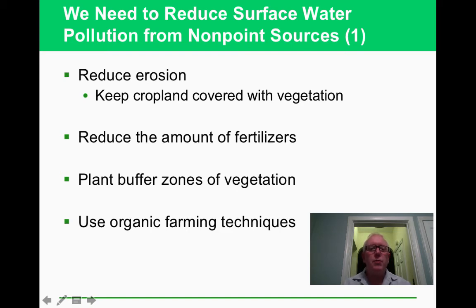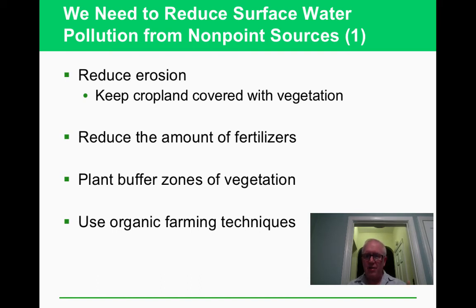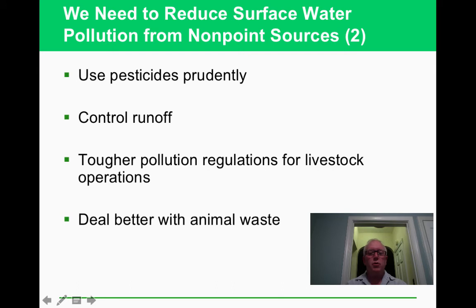To reduce surface water pollution, we can cut down on erosion and reduce fertilizer use. Buffer zones of vegetation between parking lots or farmland and waterways are an effective tool — a local example at Thompson Park shows a buffer zone specifically designed to stop parking lot runoff from flowing into waterways that eventually reach the Manasquan River and the ocean. Organic farming techniques eliminate pollutants at the source.